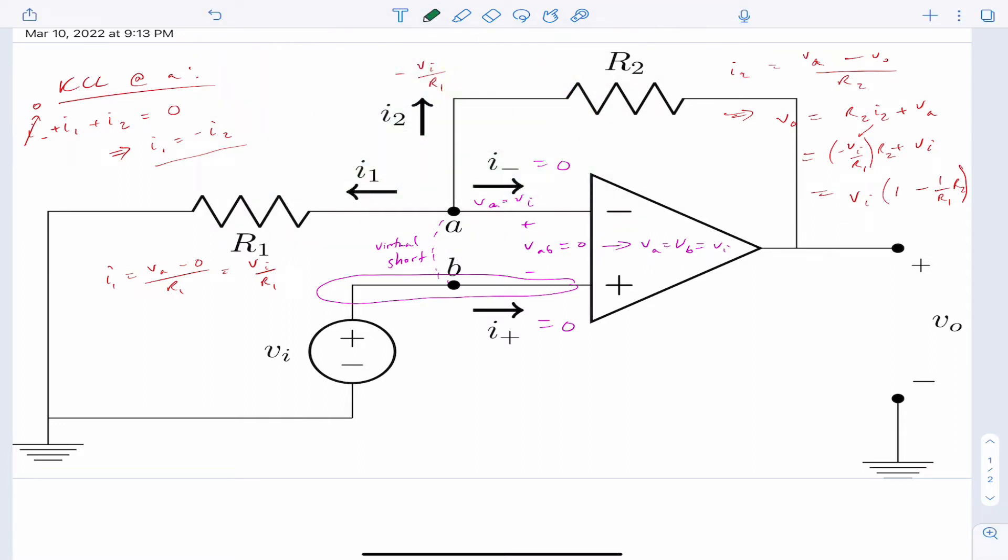So what I need is a negative sign here, I believe, because what I did was I kept the VA on this side, which is VI. And then I pushed I2 R2 from this side to the other side. So that introduces the negative sign. And then there's this negative sign, VI over R1. That's I2. So that means I need to flip that sign. Okay, so that is correct now.